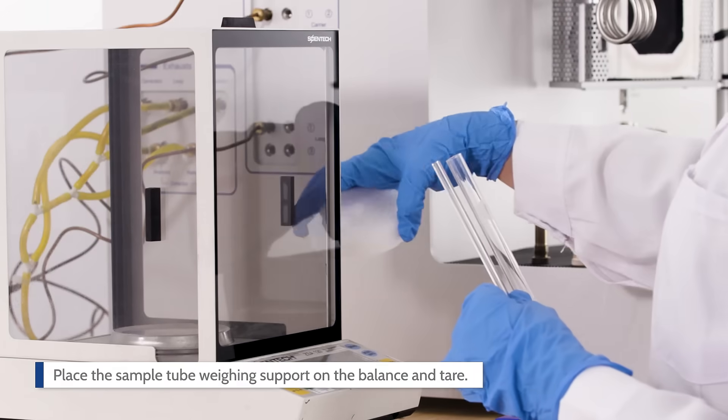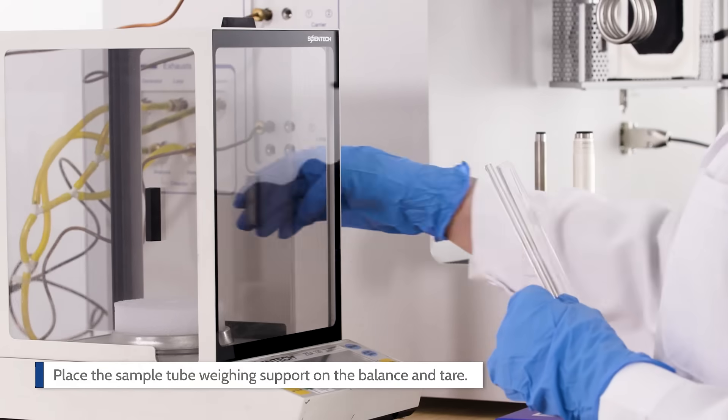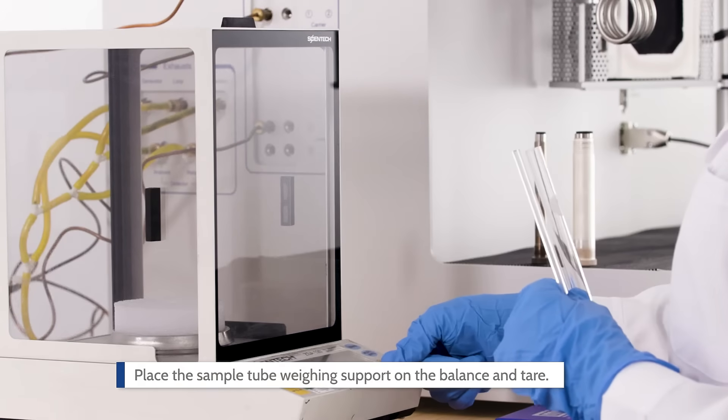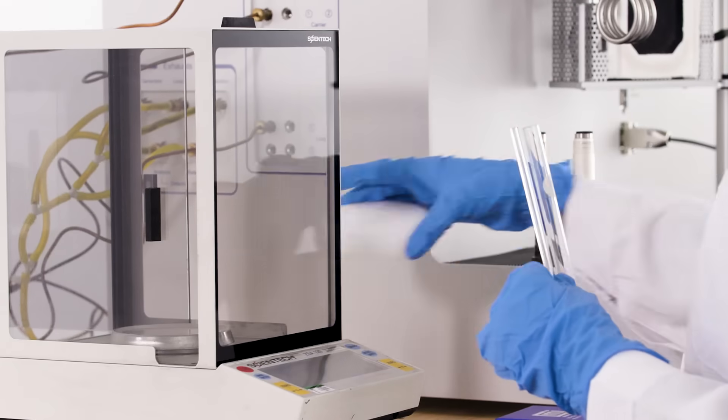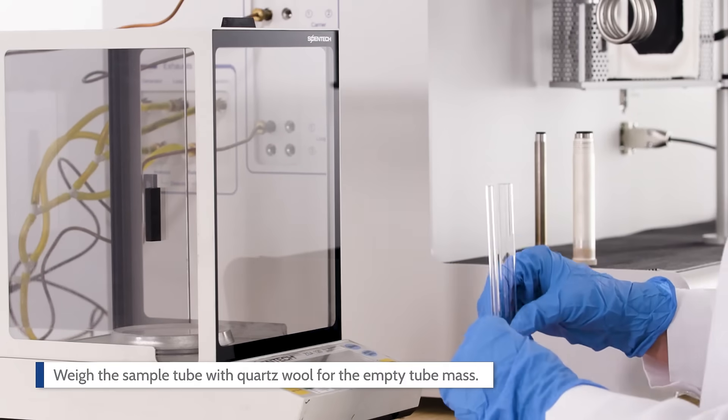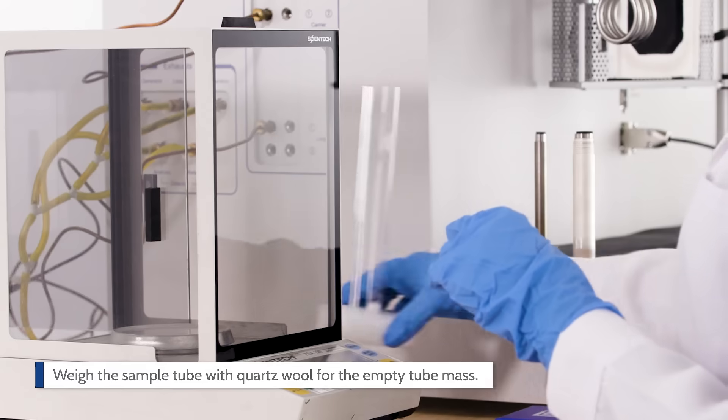Place the sample tube weighing support on the balance and tare. Weigh the sample tube with quartz wool for the empty tube mass and record.